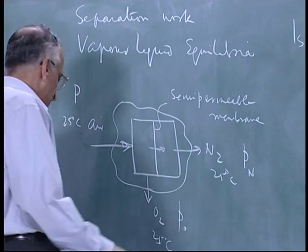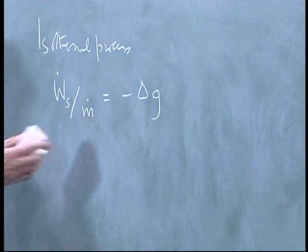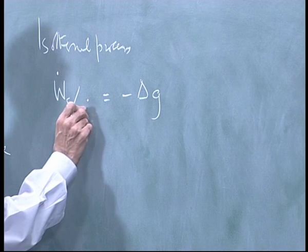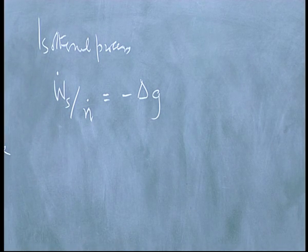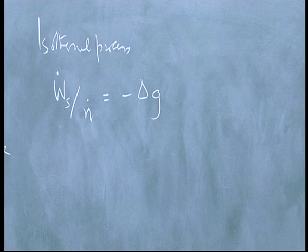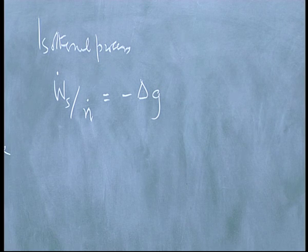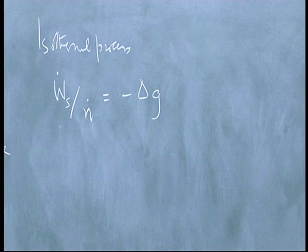For gaseous mixtures all I have to do is calculate according to thermodynamics minus delta G. You can make this if you like N dot. Usually M is used for mass. Make this N dot per mole. For 1 mole per hour or per second flowing through, I want to calculate the rate at which work has to be done. So this is very simple.